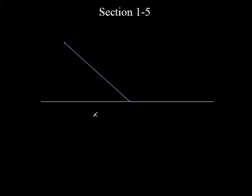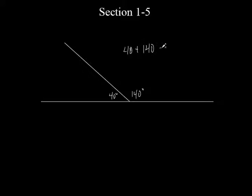So let's say we had something like this, and that was 40 degrees right here. What's this angle right here going to be? It's going to be 140. So 40 and 140 — if they add up, what do they add up to be? 180. So 40 plus 140 is equal to 180 degrees. Anytime you have two angles that add up to 180, we call them supplementary angles.